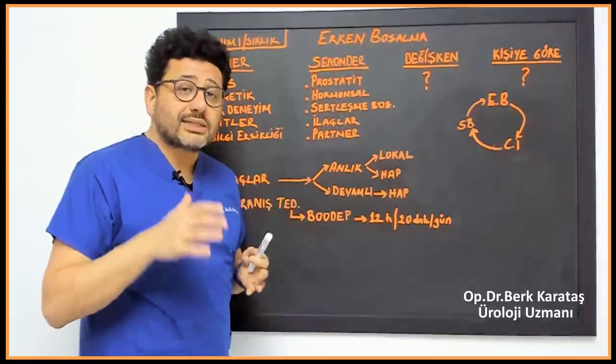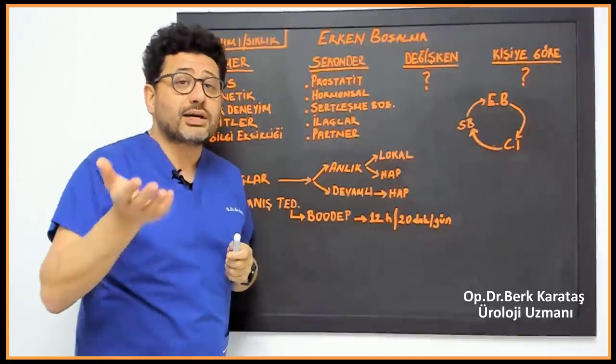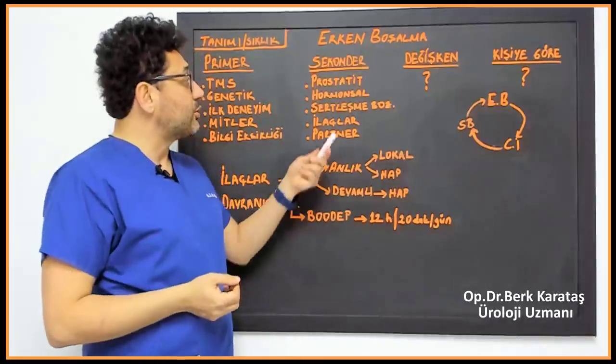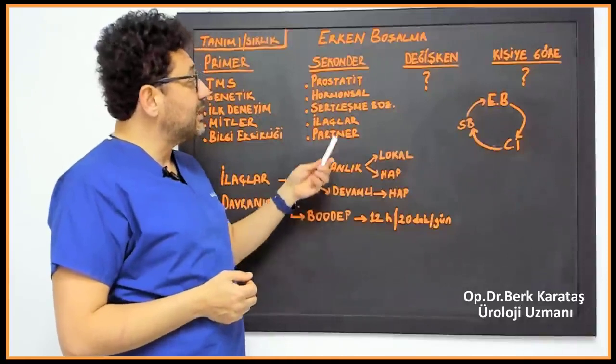Hormonal causes, imbalances in hormones, for example high prolactin hormone, high goiter hormone can lead to premature ejaculation.